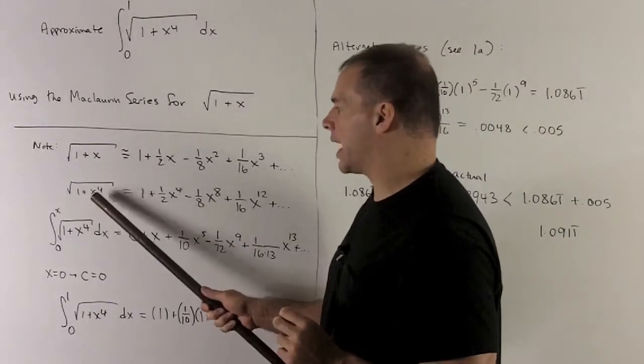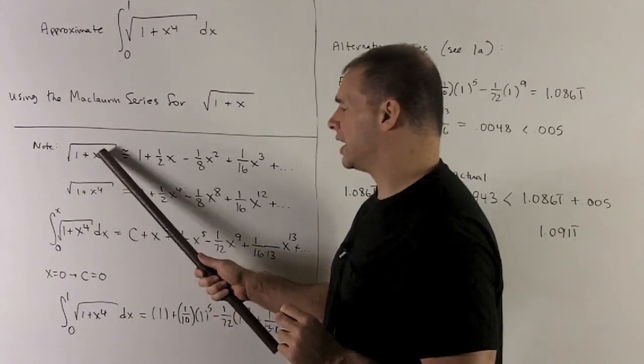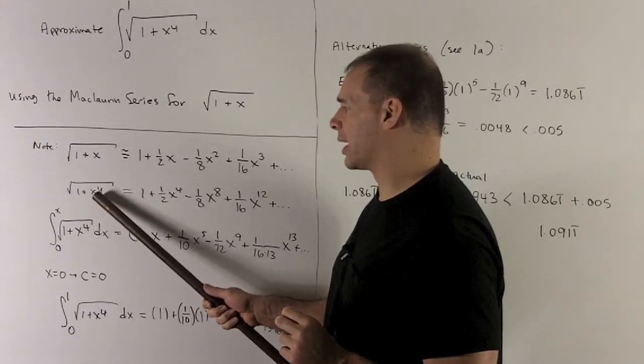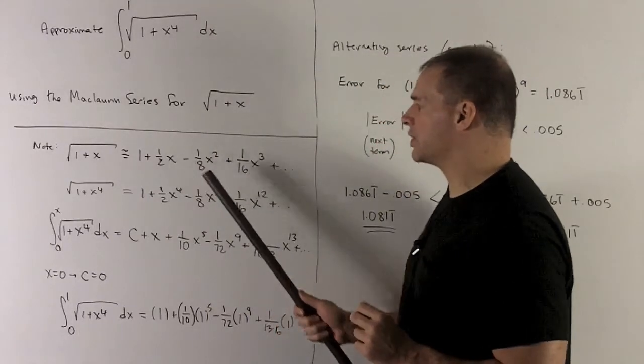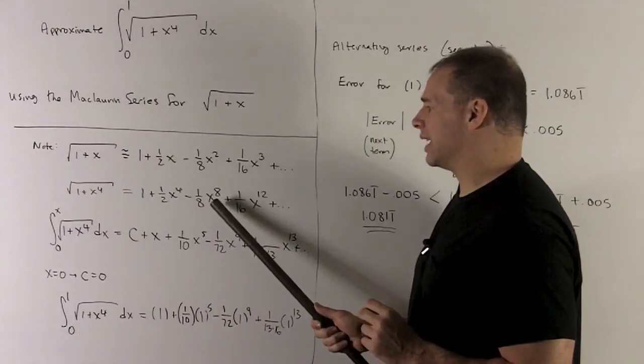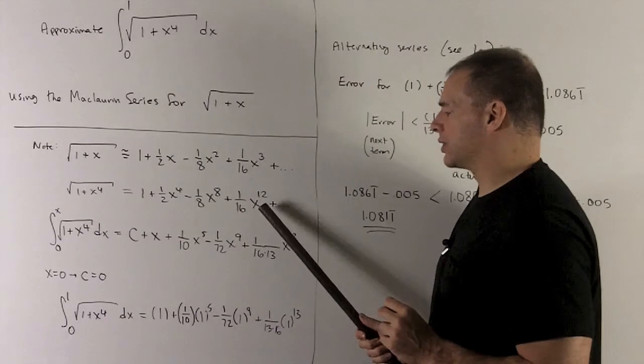So if I want to switch over to x to the 4th power, wherever I see an x here, I'm going to change it to x to the 4th. So we get x to the 4th for this. x squared goes to x to the 8th, x cubed goes to x to the 12th.